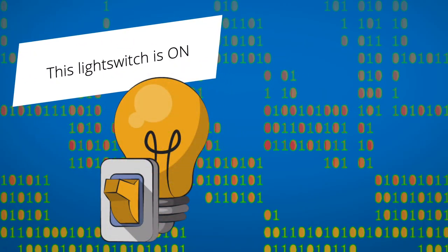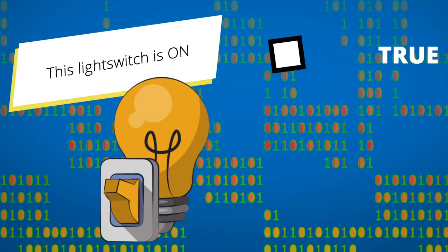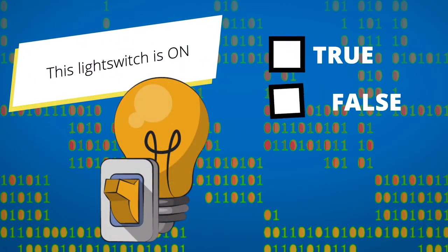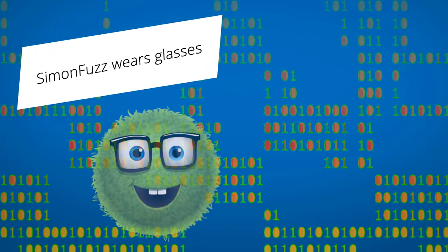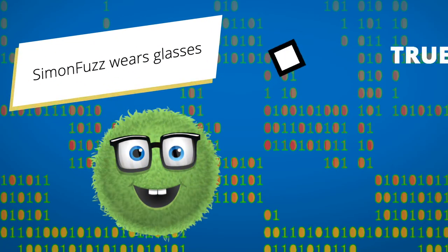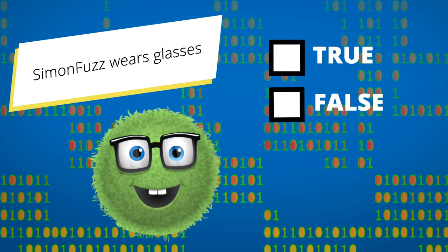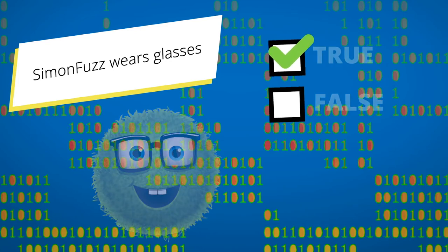This light switch is on. True or false? That's true. You can tell because the switch is up and the light is shining. Simon Fuzz wears glasses. True or false? That's also true. You can see he loves his square frames.